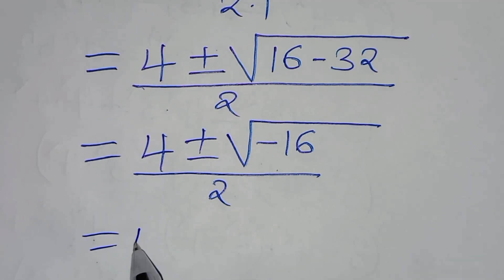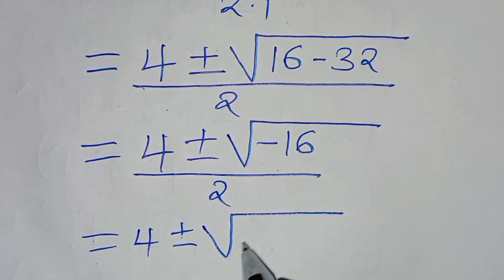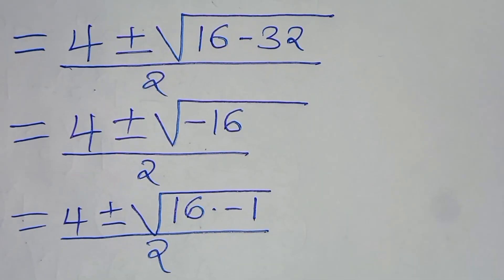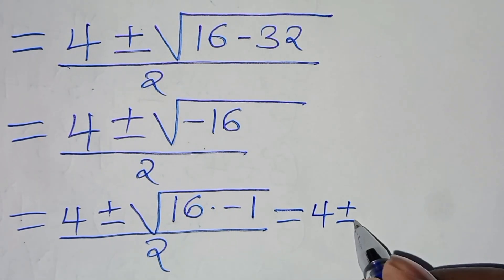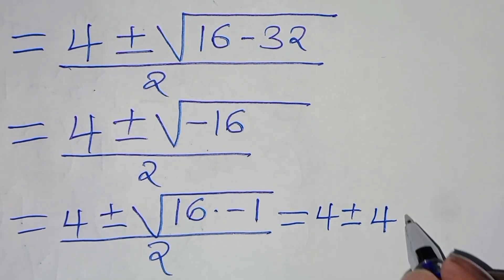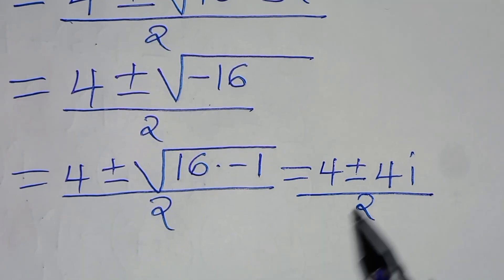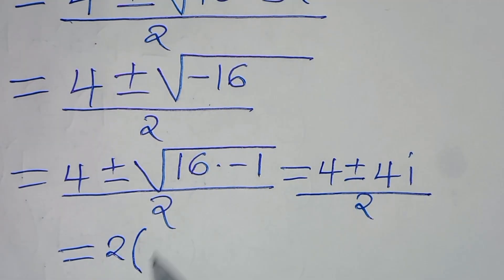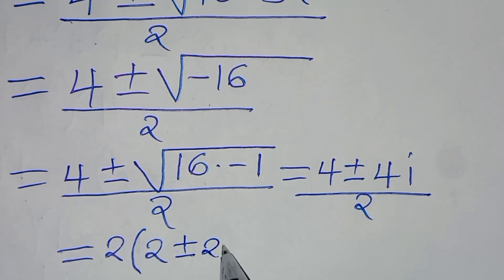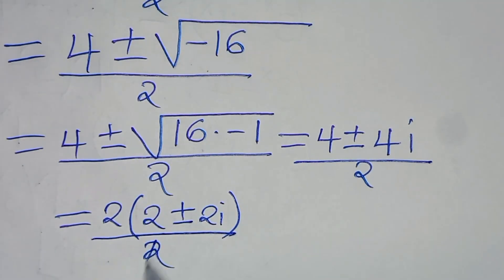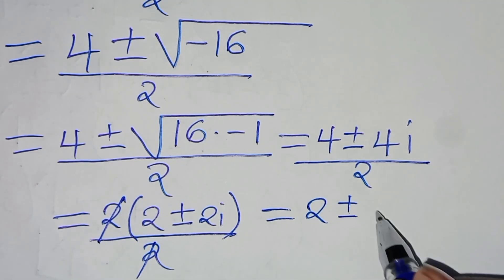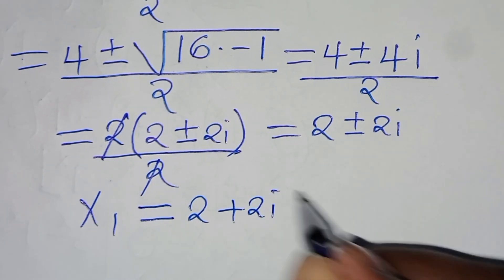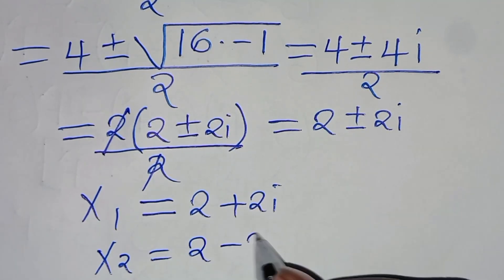So here we have 4, plus or minus the square root of minus 16, which we can express as 16 times minus 1, over 2. Therefore, we have 4, plus or minus the square root of 16, which is 4, times the square root of minus 1, which is i, over 2. From here, this is 4 plus or minus 4i. We can factor out 2, so that we have 2 times the quantity 2 plus or minus 2i, divided by 2, which simplifies to 2 plus or minus 2i. So x1 is equal to 2 plus 2i, and x2 is equal to 2 minus 2i.